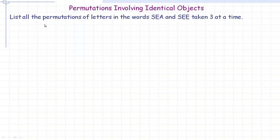In this first example, we're asked to list all the permutations of the letters in the word SEA, so as in like a body of water, or the word SEE as in to see something, taken three at a time, so we're using all of the letters.